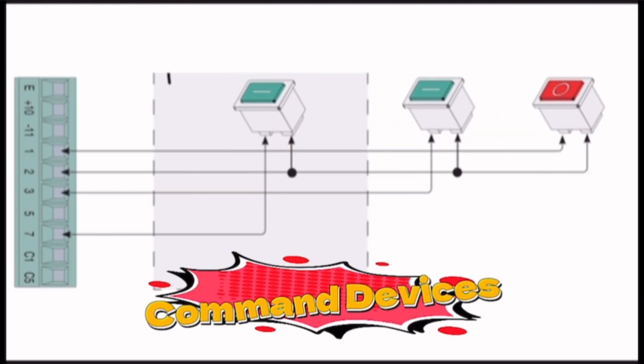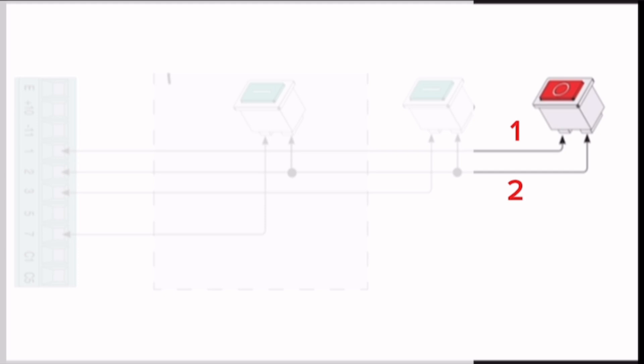Command Devices: Terminal 1 and 2 is stop button NC contact. Button to stop barrier arm. To resume movement, press the command button or transmitter key. If unused, set DIP switch 9 to ON.